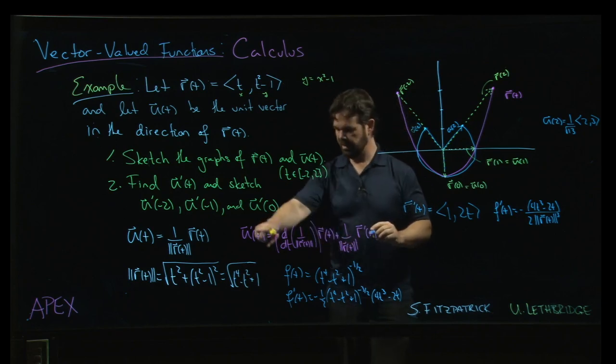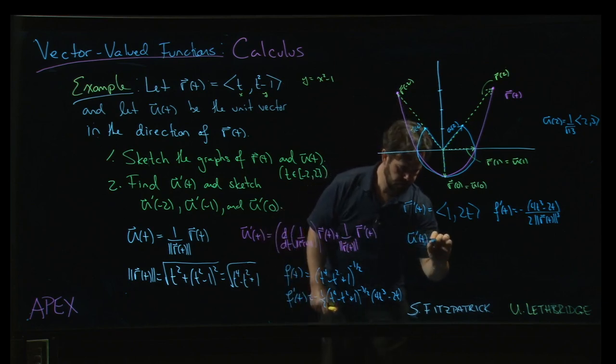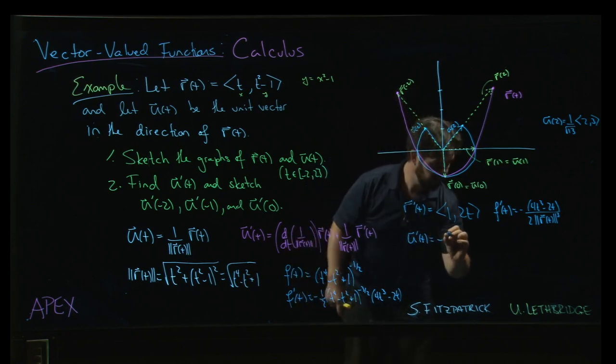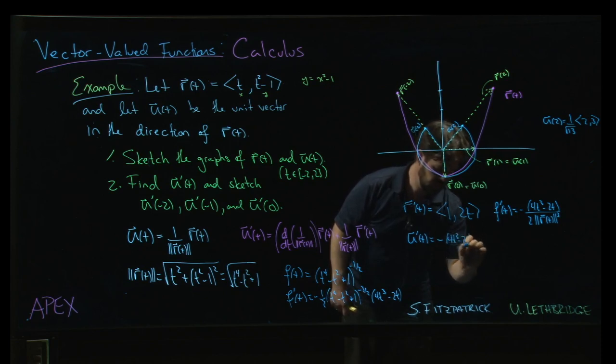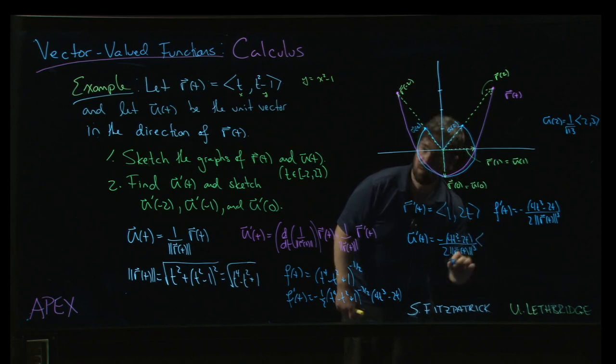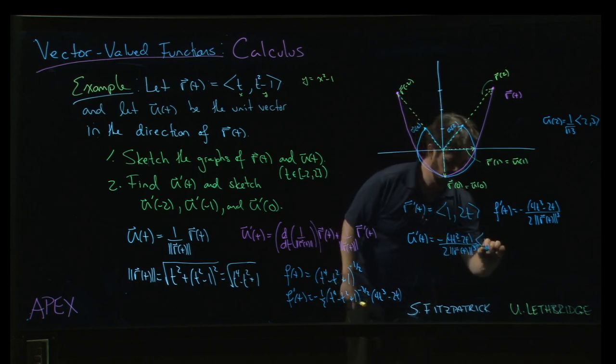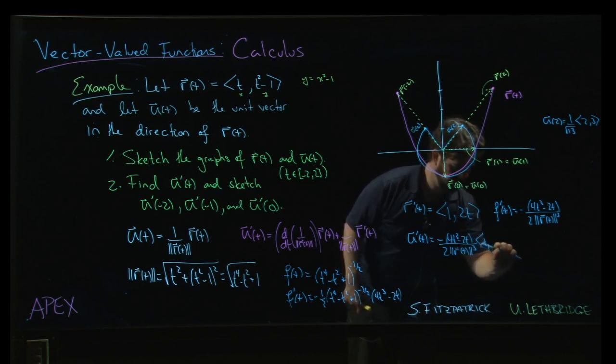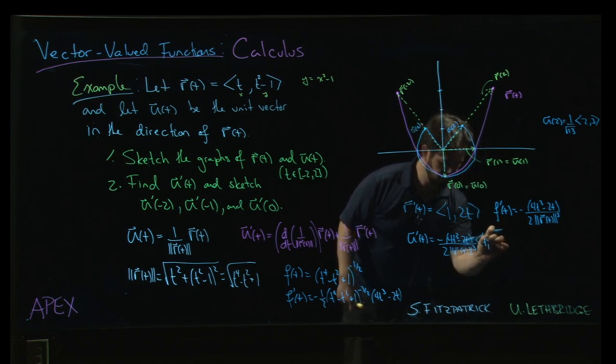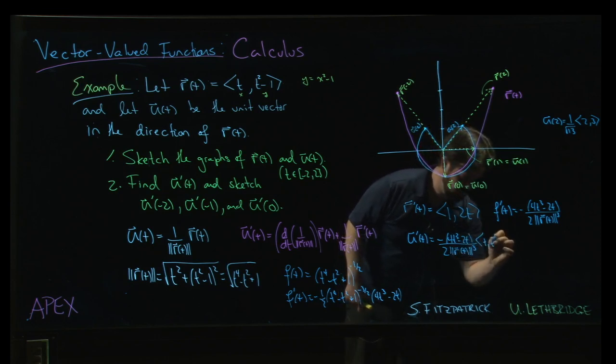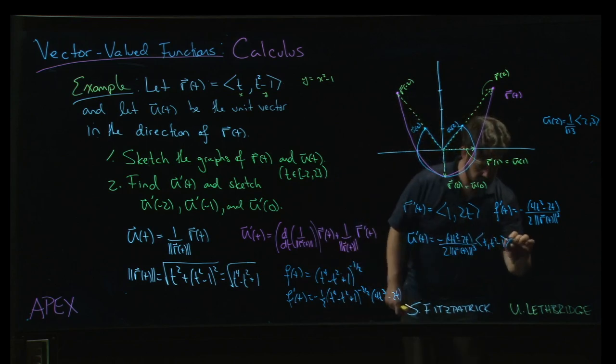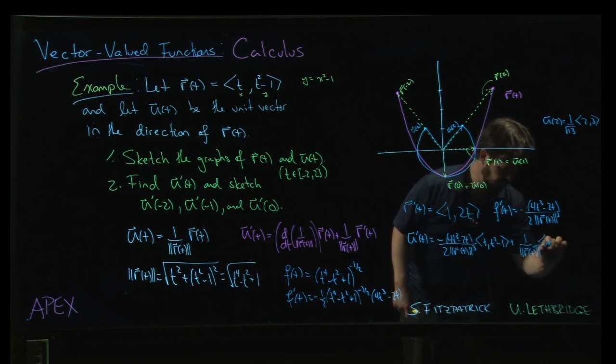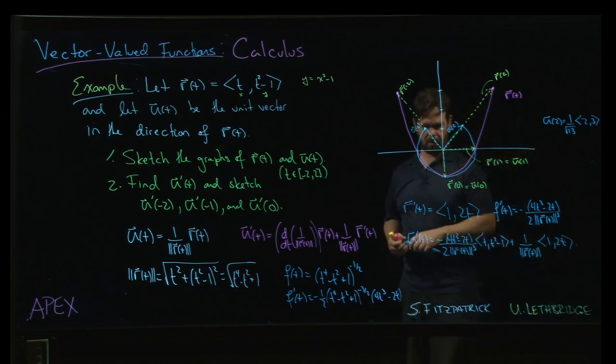So putting this together, u prime is going to be minus 4t cubed minus 2t over 2 times the magnitude of r cubed times r of t, which is <t, t squared minus 1>. And then we have 1 over the magnitude of r times r prime, and that's where we get the <1, 2t>.